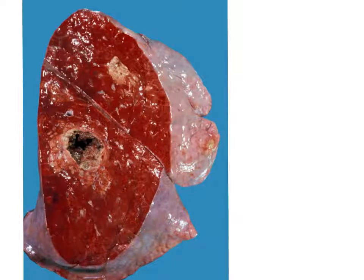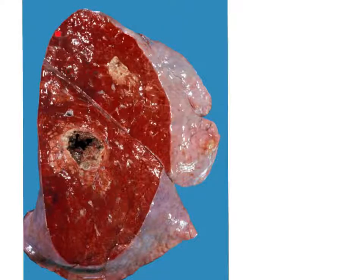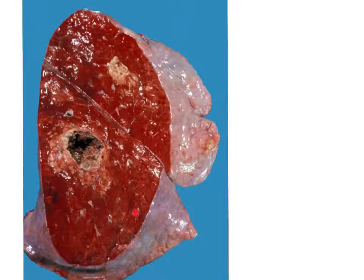In this picture, we have a sagittal section of the lung, and we can see that it has got two lobes. There is one lobe superiorly and another lobe inferiorly. So being a bilobed lung, this is most likely the left lung.